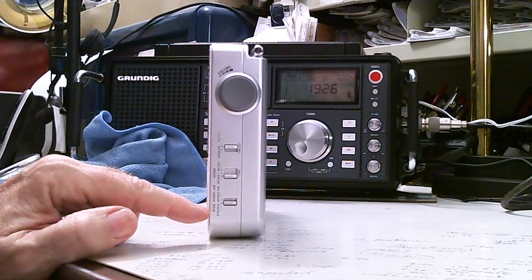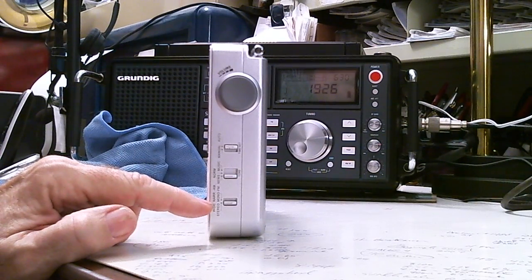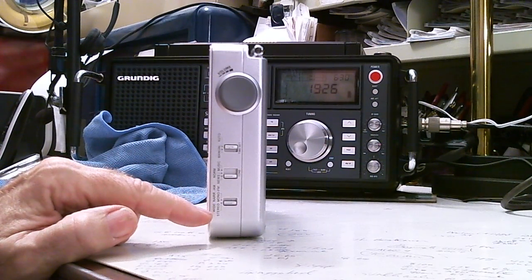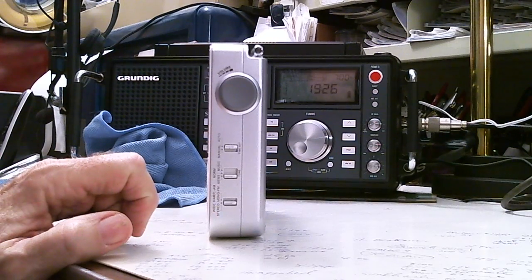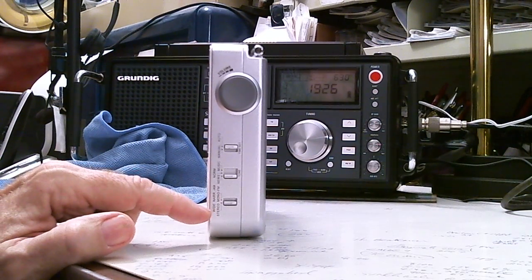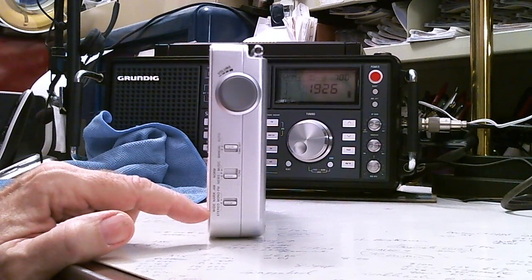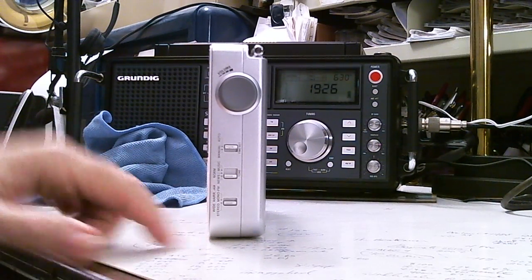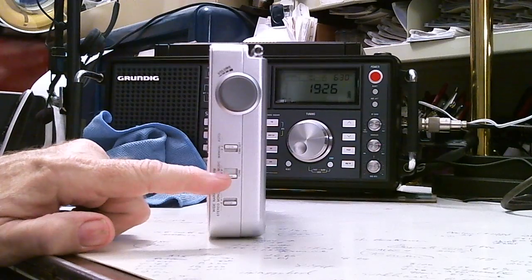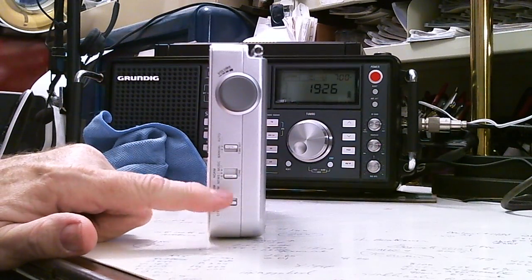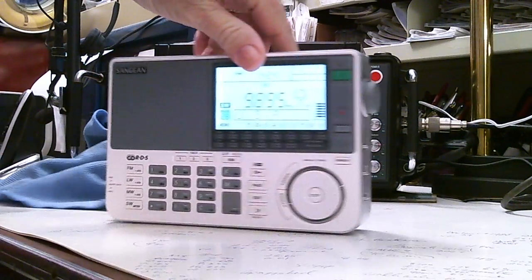Down here you have your setting for stereo or mono. This also is a setting, if you're in the AM band, for wide and narrow. So you've got not only this filter button up here, but you have the wide and narrow down here.